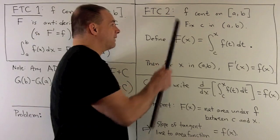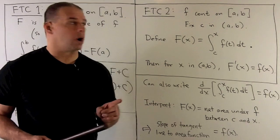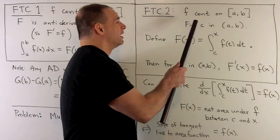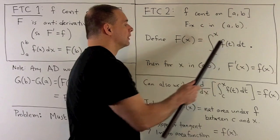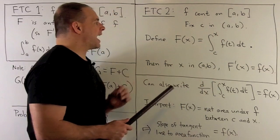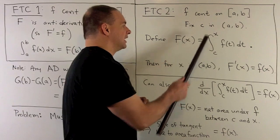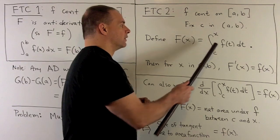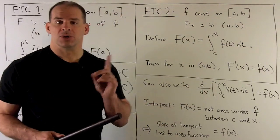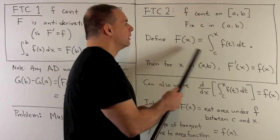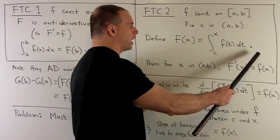The statement: we have f continuous on the closed interval [a, b]. We take some c inside the open interval, and then we define capital F of x equal to the definite integral from c to x of little f of t with respect to t. Since we're using x in the function, we use the dummy variable t for integration.